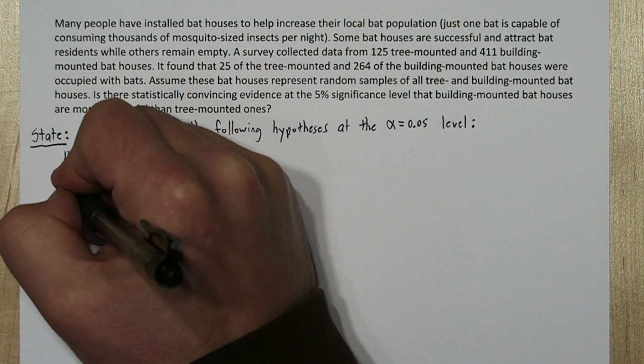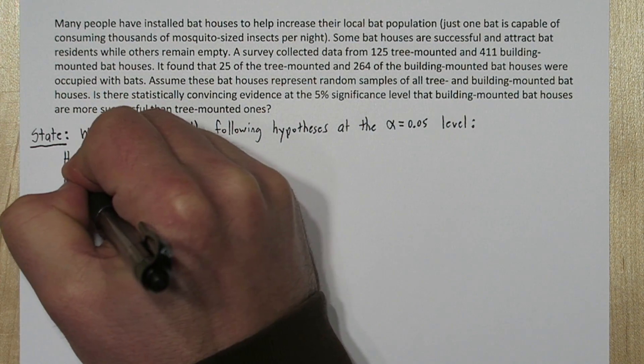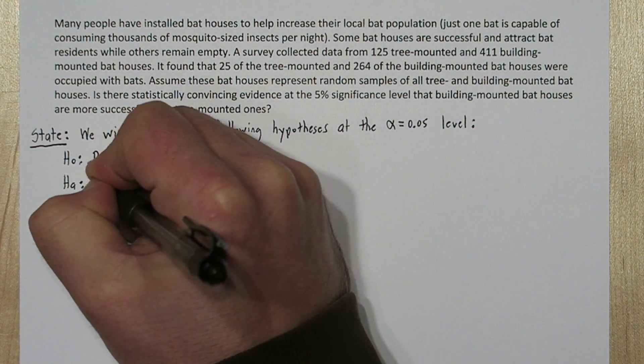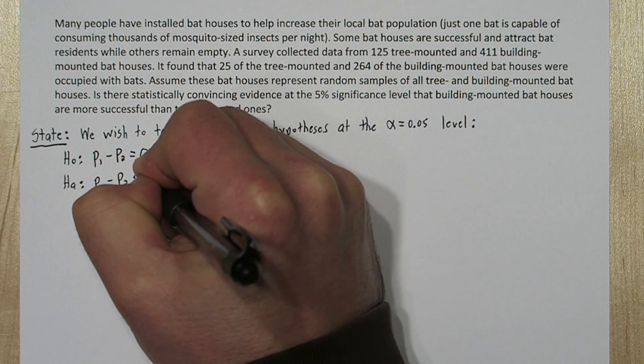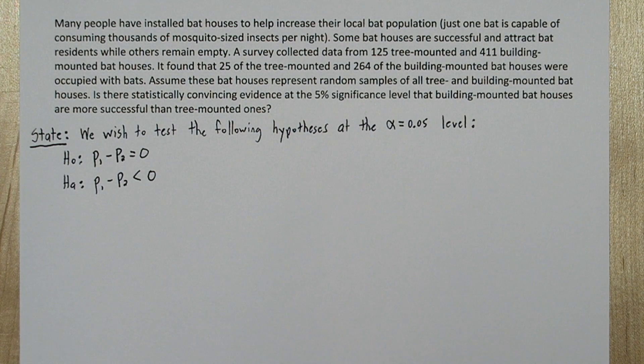And since we're specifically interested in if the building-mounted bat houses are more successful than the tree-mounted ones, our alternative hypothesis is going to be that P-sub-1 minus P-sub-2 is less than zero. In other words, P-sub-2 is greater than P-sub-1.